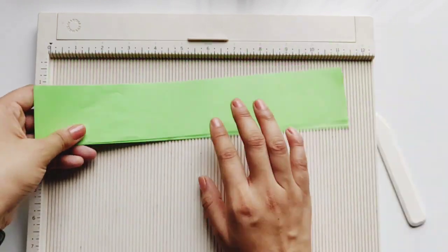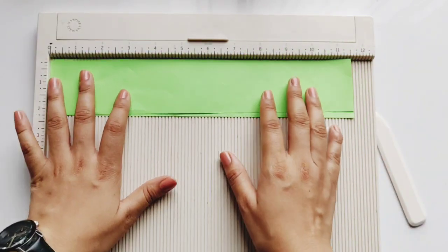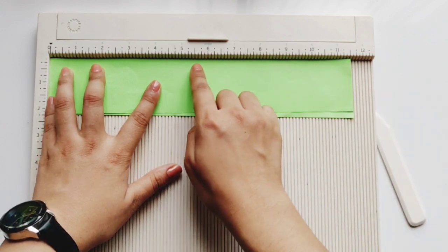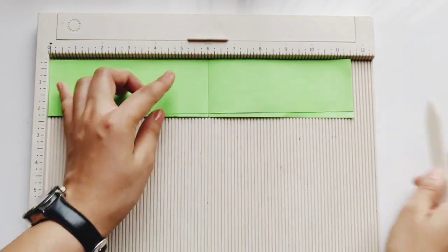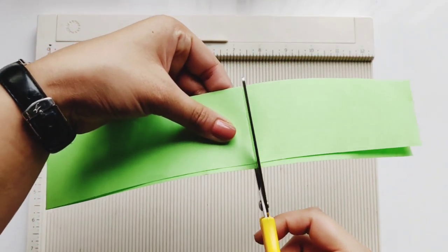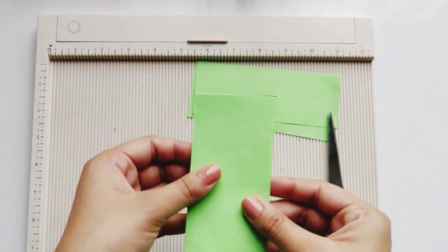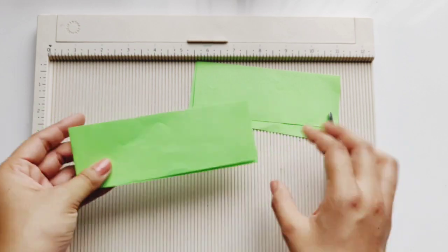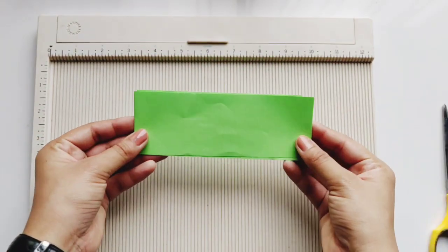The fifth use for your scoring board is using it as a cutting guideline. So you can use it as a guideline when you are in a hurry. You don't want to use a scale, pencil, mark it, etc. Just go ahead and score it where you want to cut it and then use your scissors and you are done.